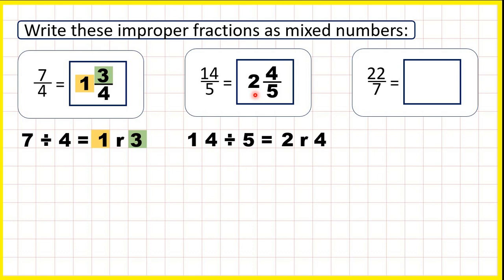So, our mixed number is 2 and 4 fifths. The 2 is our whole number, and the remainder 4 is our numerator.